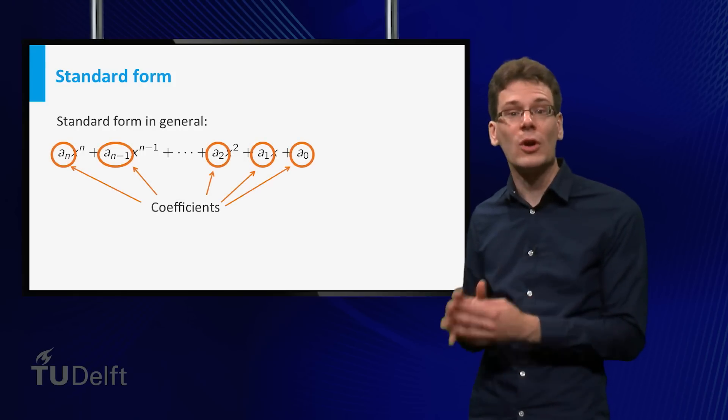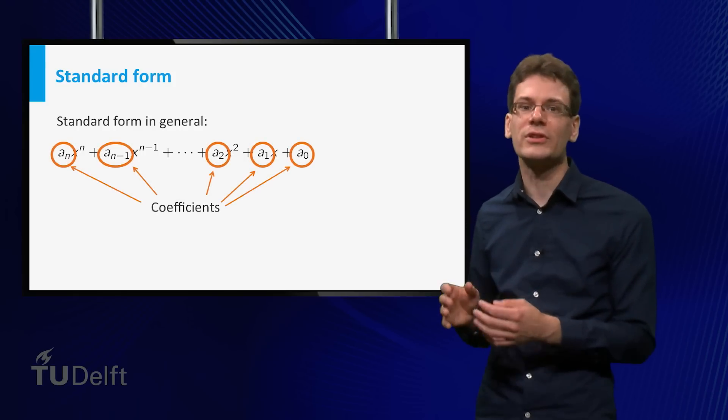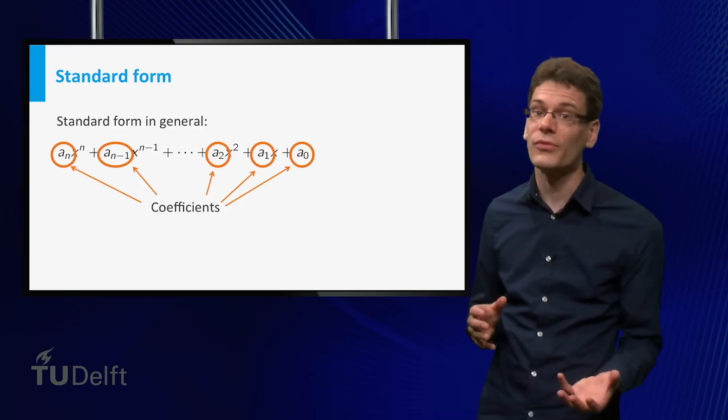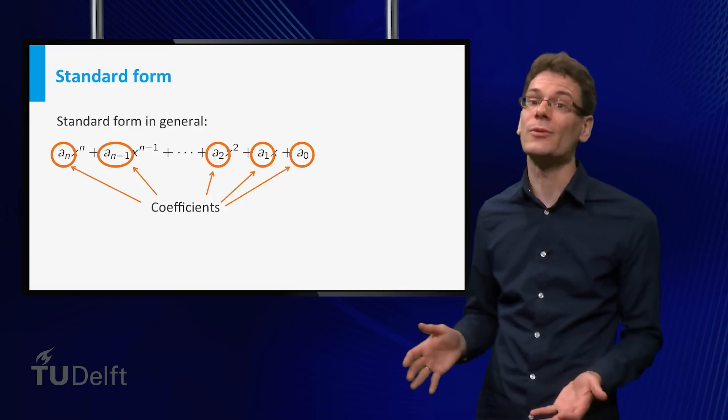The a's are called the coefficients. These coefficients can also be negative, and can also be fractions; in fact, they can be any real number.